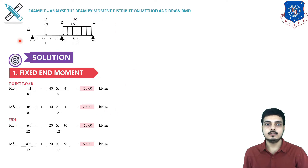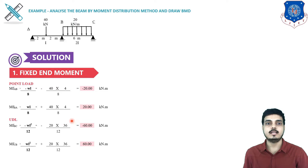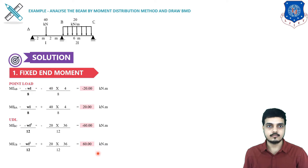For UDL the formula is WL²/12. At B it is negative and at C it is positive. W = 20 kN/m, L = 6 m, so L² = 36, divided by 12 gives minus 60 kN·m for MFBC and plus 60 kN·m for MFCB. This first step is common to both the slope deflection method and the moment distribution method.